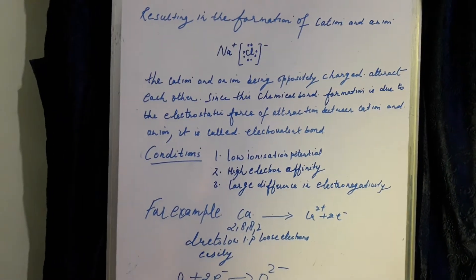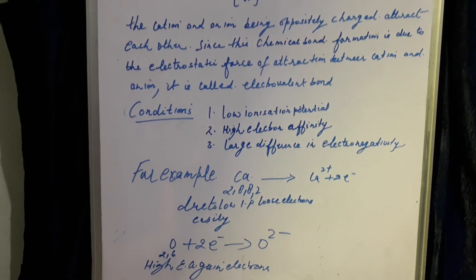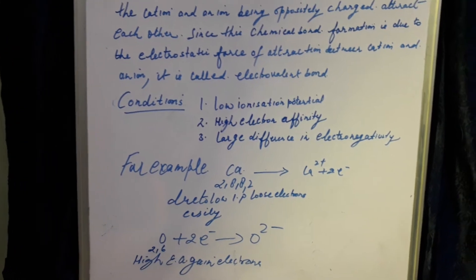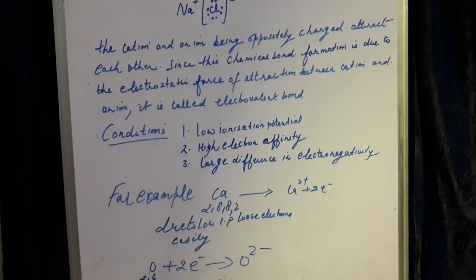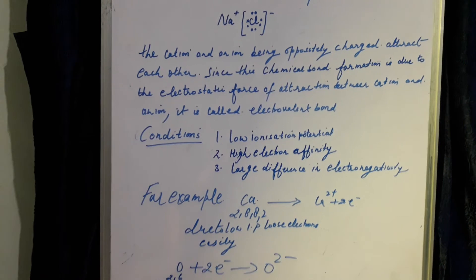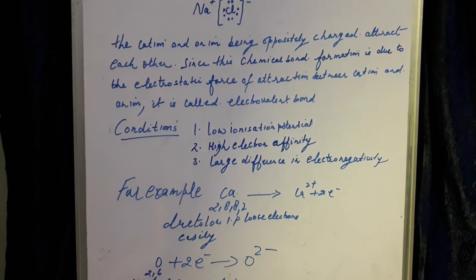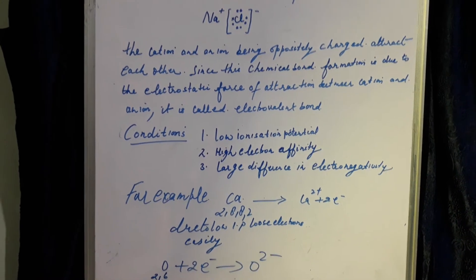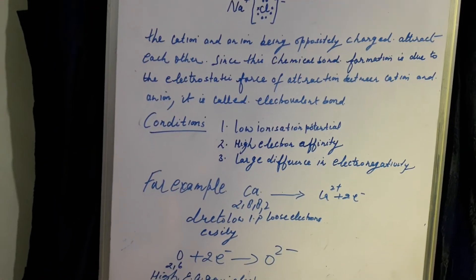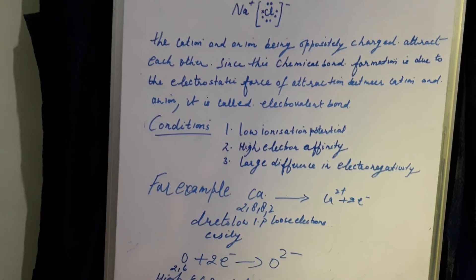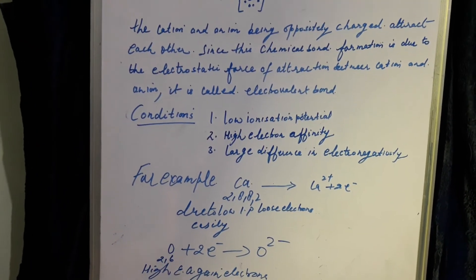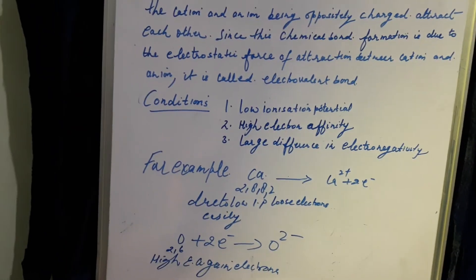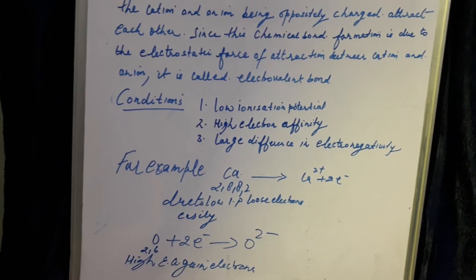Now, what are the characteristics of an electrovalent bond? All electrovalent compounds are crystalline solids. Why? Due to the presence of very strong forces of attraction — that is, electrostatic forces. They are also mostly water soluble, due to the polar nature of water, which will be discussed in a second video under the heading of covalent compounds.